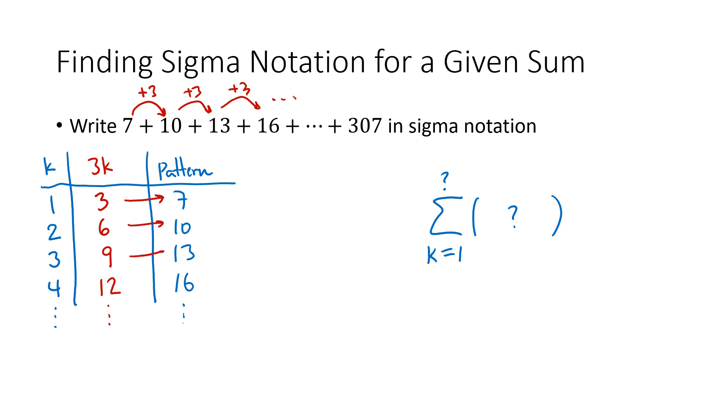So now we should think to ourselves, how can I modify these numbers? What do I do to these numbers that would get me the pattern that I actually want, which is 7, 10, 13, 16? Hopefully what you see is that what I need to do is add 4. So the pattern that I want, the formula for this pattern, is going to be 3k plus 4. So that's what I'm going to write here in these brackets.